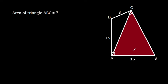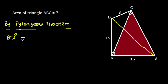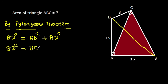If we join BD, then by the Pythagorean theorem, BD² = AB² + AD², and also BD² = BC² + CD². From these two equations,